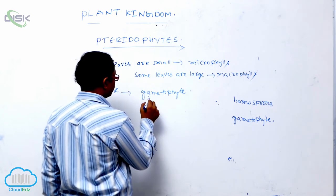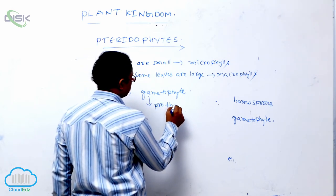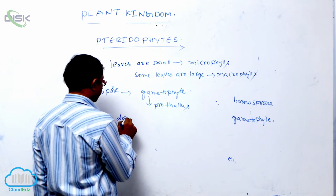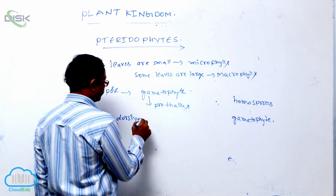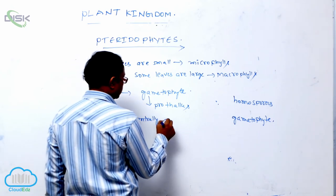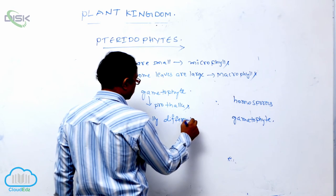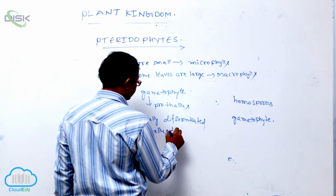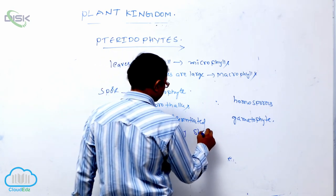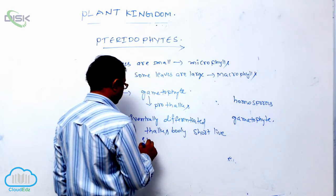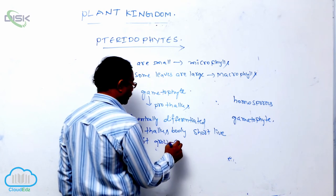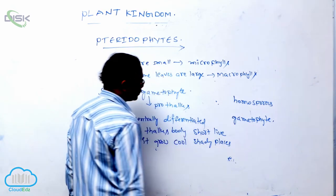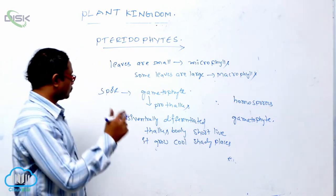This gametophyte is also known as a prothallus. The prothallus is a dorsiventrally differentiated thallus body that is short-lived. Generally it grows in cool and shady places.